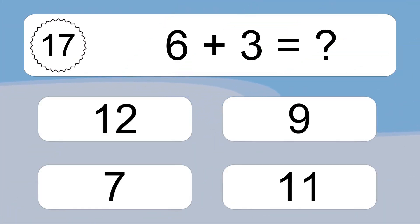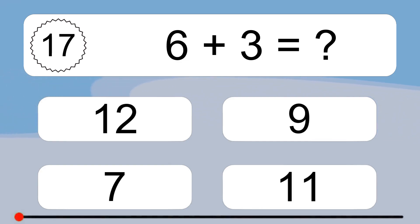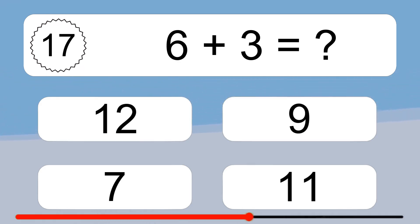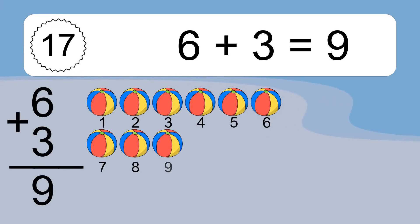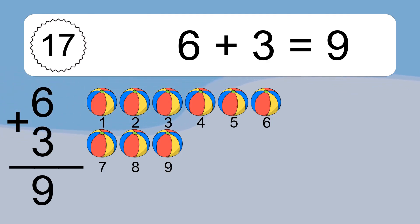6 plus 3 equals what? 6 plus 3 equals 9. Let's count it. 1, 2, 3, 4, 5, 6, 7, 8, 9.